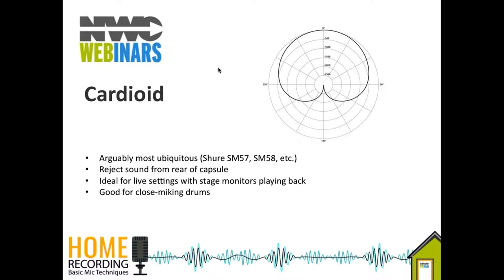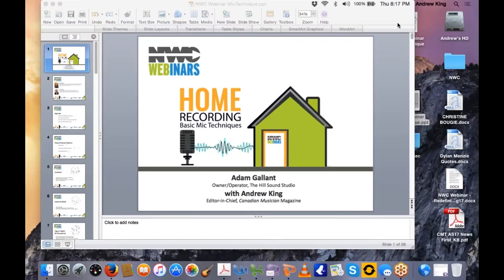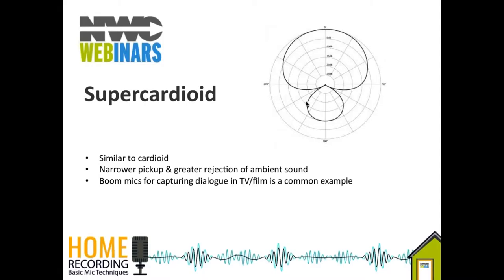Supercardioid and hypercardioid are further iterations of the cardioid shape — it's all about focus. Like a camera lens, a supercardioid has more reach, looks deeper into the space, and is narrower along the sides. To create that narrow focus, you end up opening up the back of the microphone and letting a bit of sound in. The boom mic is a great example — it gives a sense of space, capturing both room sound and dialogue, which dialogue editors really appreciate.